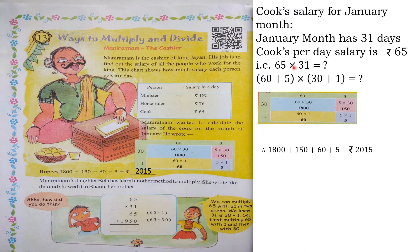So in this method, a two-digit number is multiplied by a two-digit number by breaking down all the numbers. But Mani Ratnam's daughter Bella has learned another method to multiply. She wrote it and showed it to her brother Bhanu, who was confused about how she had done it. She replied that we can multiply 65 with 31 in just two steps.